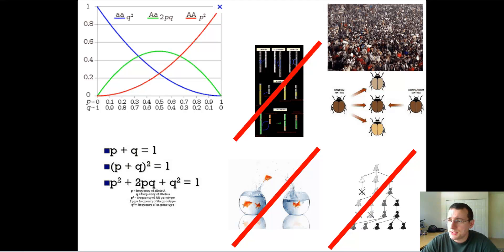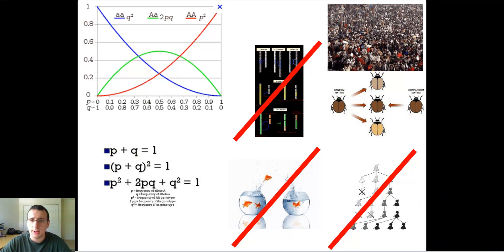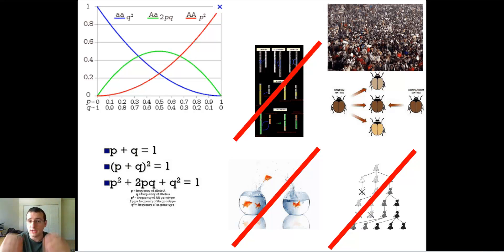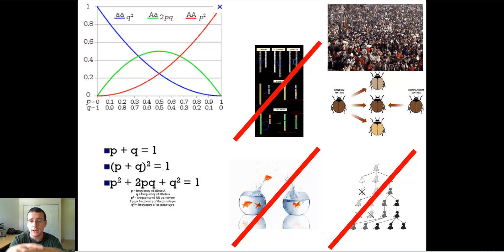We've been talking about the fact that in order to understand how evolution takes place, it's important to study populations because evolution happens at the population level. It's never a member of the species that evolves, but the entire population. Therefore, you need to understand differences that exist within a population as well as similarities that exist across populations in order to understand how interactions between and within populations will lead to evolution.